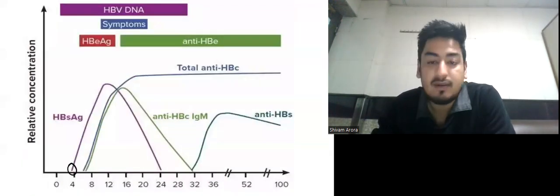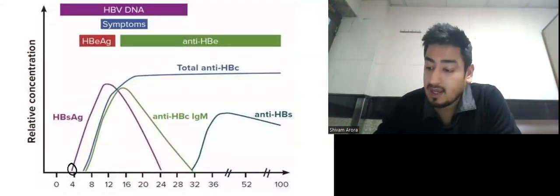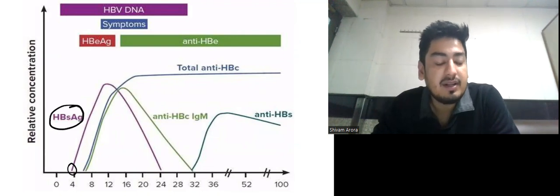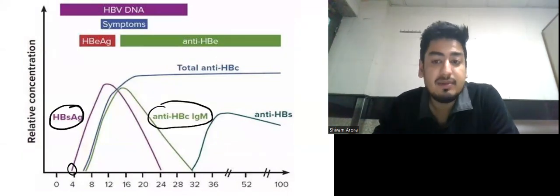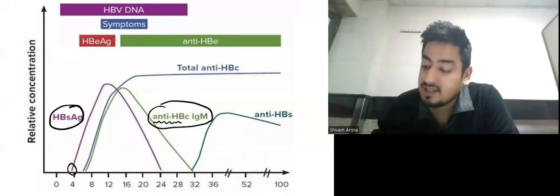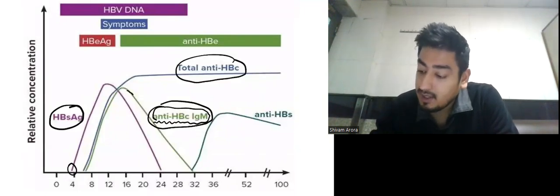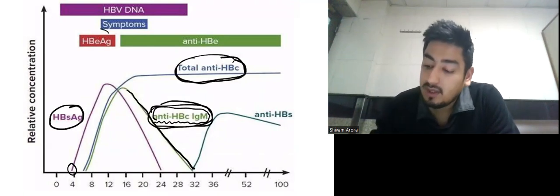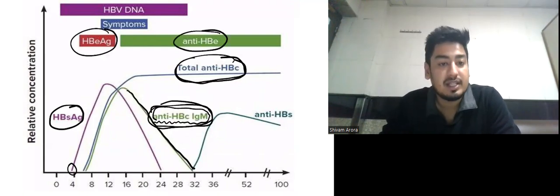Now let us discuss these two graphs — one of self-resolution and another of the chronic phase. If a person has got Hepatitis B, the first antigen to be detected in the blood is HBsAg. Following that, there is appearance of anti-HBc antibody. We have both IgM anti-HBc and total anti-HBc positive in the acute phase, but after some time IgM anti-HBc decreases and there is only total anti-HBc. Meanwhile, there is appearance of HBeAg.